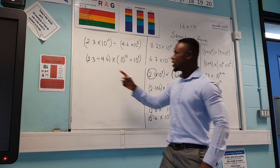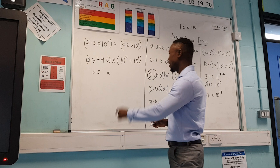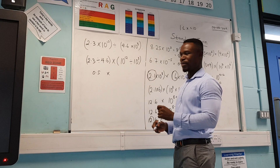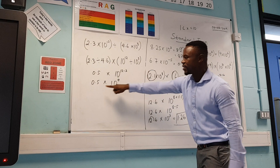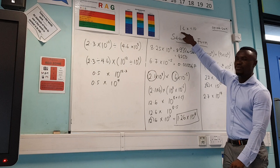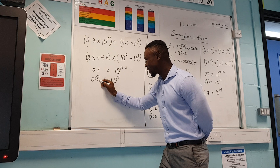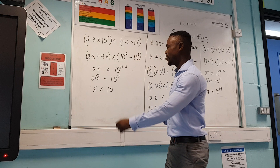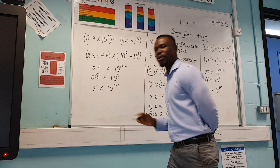2.3 divided by 4.6 is 0.5, because 2.3 is half of 4.6. For the powers, the law of indices says that when dividing we subtract the powers: 12 take away 3 gives 10 to the power of 9. So we have 0.5 times 10 to the power of 9. But 0.5 is not in standard form — it starts with zero, and standard form must start from 1 up to 9.999.